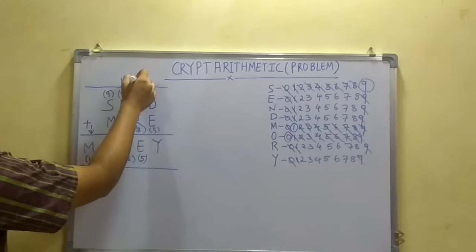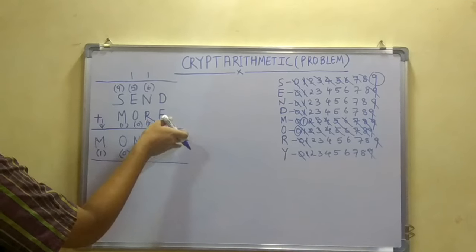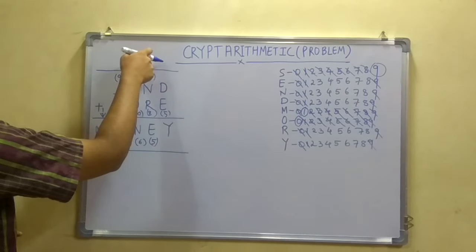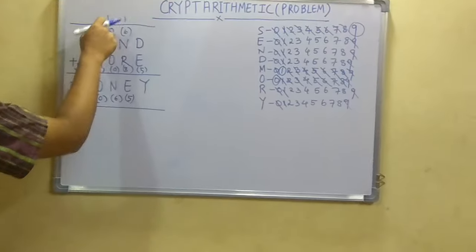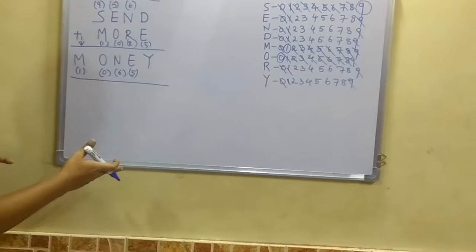So it should be 15. So you have to add a carry 1. Means from here you had a carry here. Means 6 plus 1 is 7. 7 plus 8 is 15. And this 5 carry 1 here. 5 plus 1 is 6. And this equation is balanced.